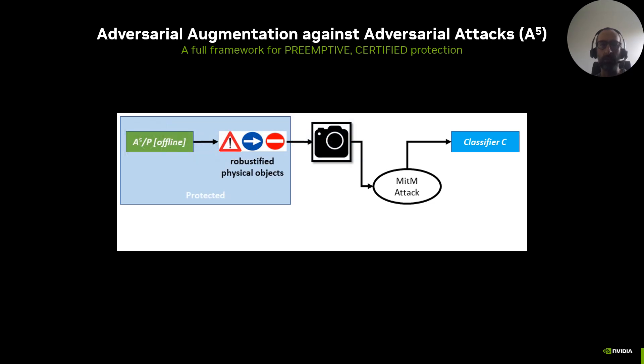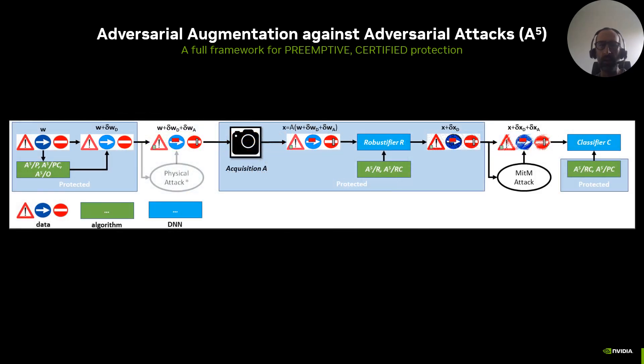A5 is easily extended to create physical objects that are certifiably robust. This could be used for the design of tools for robotics, road signs, or fonts for optical character recognition. A5 is a full framework for preemptive certified protection. Our experiments demonstrate that it overcomes state-of-the-art defense methods.